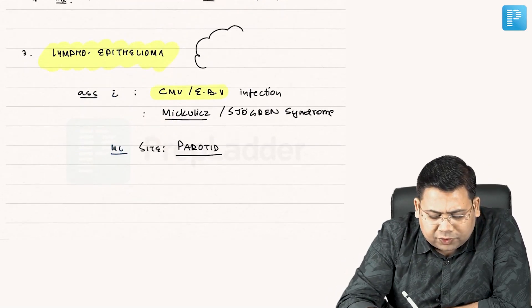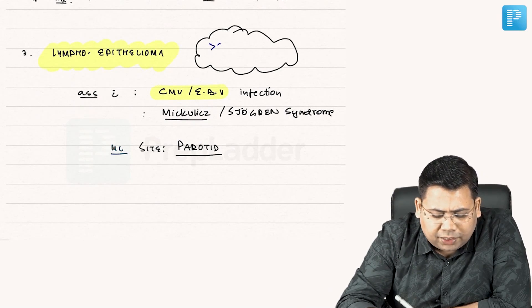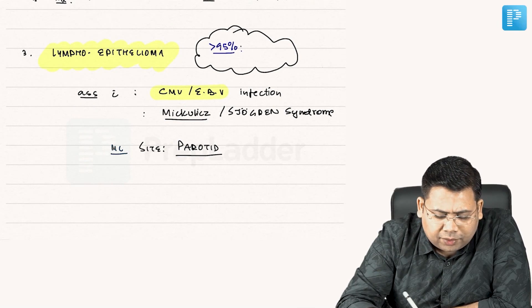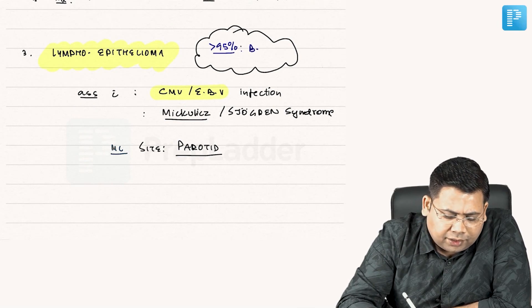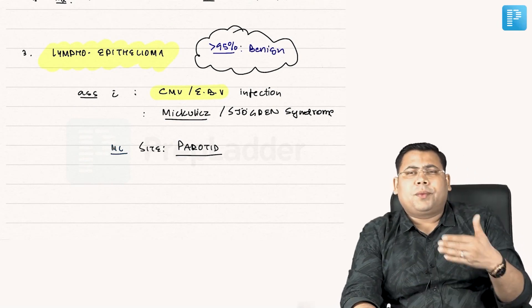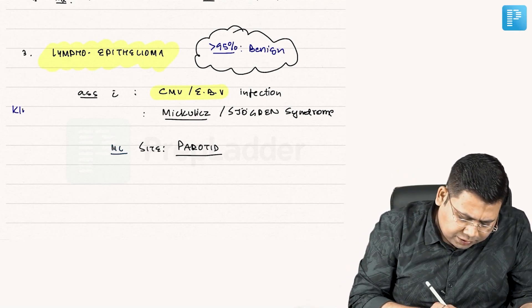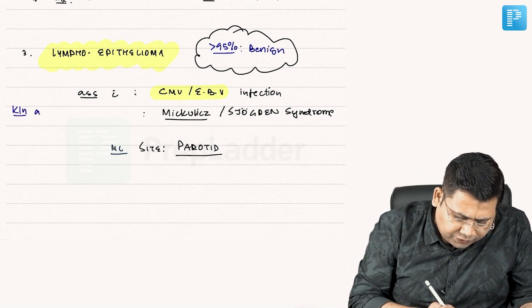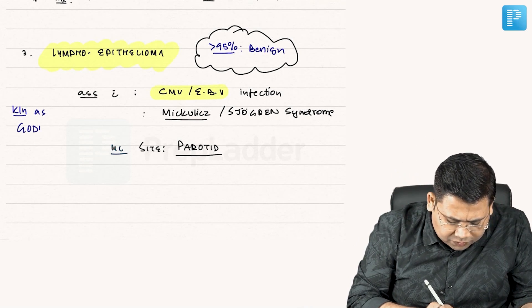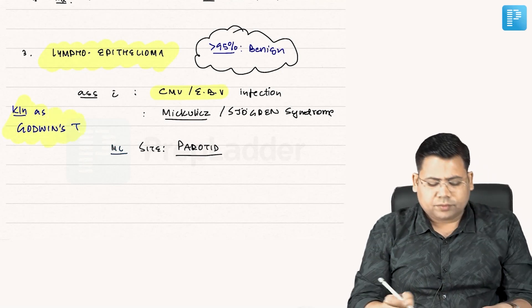Another name for this tumor: more than 95% of them are benign, and the benign type of lymphoepithelial tumors are known as Godwin's tumor. This is a very important point.